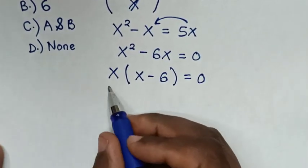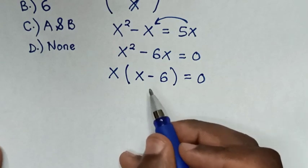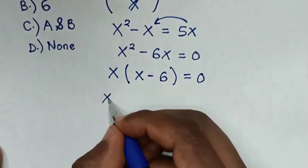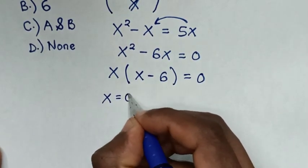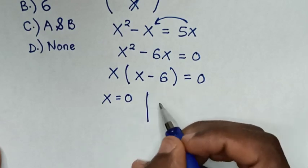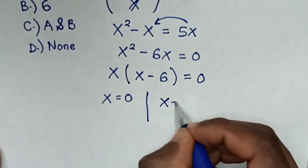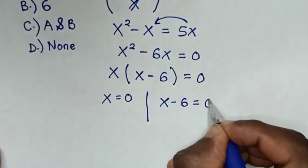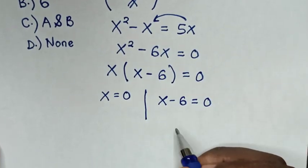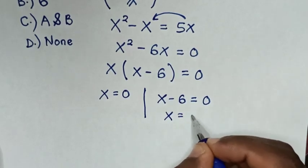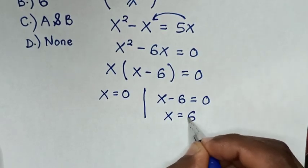We have two solutions: the first solution is x equals 0, and the second solution is x minus 6 equals 0. Taking negative 6 to the right side gives x equals 6.